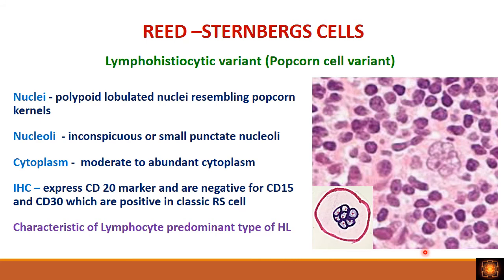The lymphohistiocytic variant is also called the popcorn cell. The name comes from the appearance of the nucleus, which is multi-lobated and resembles a popcorn kernel. Unlike normal RS cells which have very prominent eosinophilic nucleoli, here the nucleoli are inconspicuous, small, and punctate. The cytoplasm is moderate to abundant. IHC is distinctive: these cells express CD20 and are negative for CD15 and CD30. This variant is the characteristic feature of the lymphocyte-predominant type of Hodgkin's lymphoma.